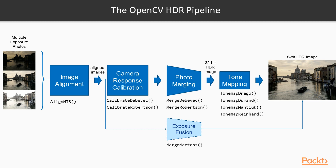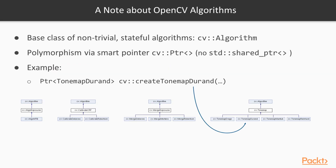We'll start with the simpler-to-use exposure fusion, and then proceed to the full HDR pipeline. Many non-trivial stateful algorithms in OpenCV cannot be easily, conveniently, or efficiently implemented with a single function call. Additionally, it is often required to use multiple different algorithms to solve the same problem in different ways. OpenCV uses the CVAlgorithm base class as an abstract polymorphic base for many of the library's algorithms. For each problem domain, CVAlgorithm is subclassed to create domain-specific interfaces from which concrete algorithm implementations are further derived.